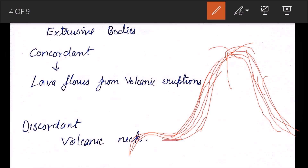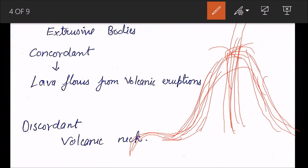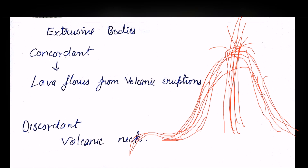Extrusive rocks can also be discordant. For example, if there is a fold and the lava comes cutting through it, that is discordant — it is not following the general pattern but cutting through the rocks and coming out. So extrusive rocks can represent both concordant and discordant relationships.